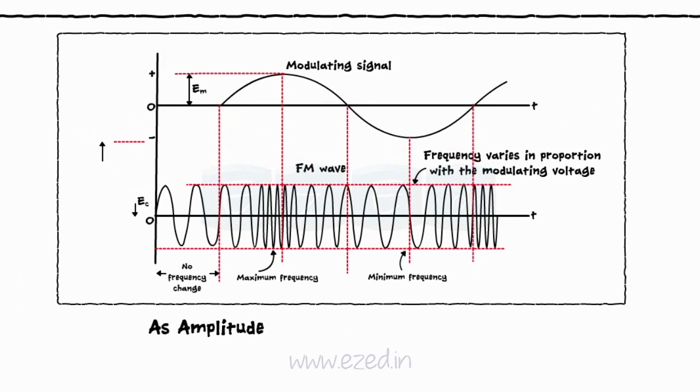As the amplitude or the information content of a modulating signal increases, the frequency of a carrier signal also increases. Its time period decreases. Hence, the signal gets compressed.